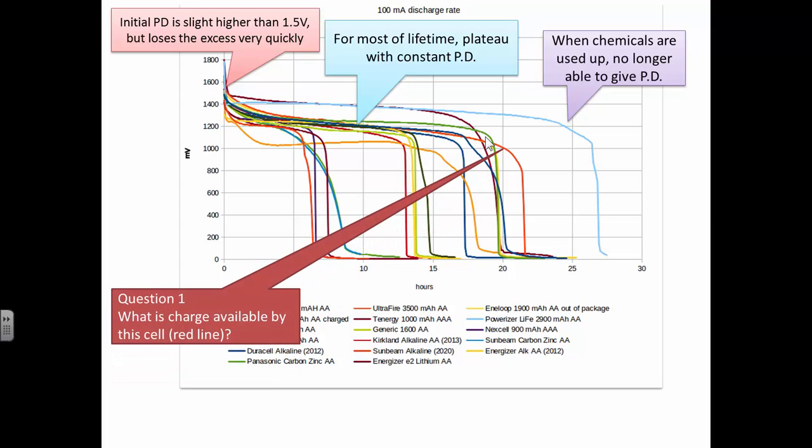Now I have a question referring to this red line. What is the charge available by this cell? How do you calculate the total charge? You need one of the formulas from the data booklet. The formula is the current is the rate of flow of charge - charge divided by time. But we need to rearrange to get the charge. The current you know is 100mA. The time is equal to 20 hours. So we have 2100mAh.